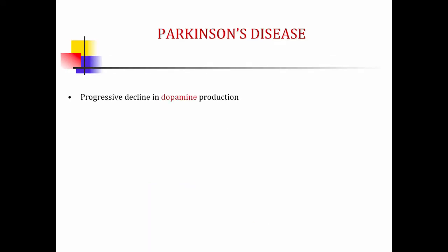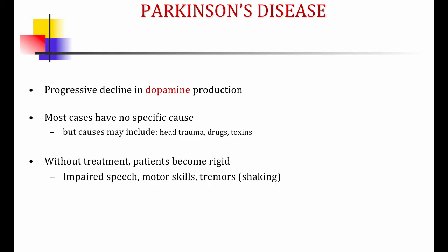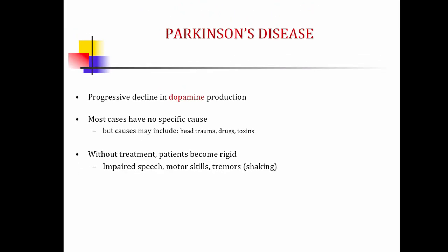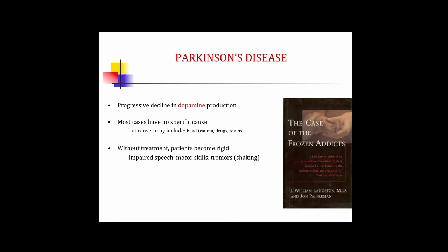In Parkinson's disease, there is a decline in production of the neurotransmitter dopamine. Most cases have no specific cause, but some causes may include head trauma, use of drugs, toxins, anoxia — depriving the brain of oxygen for a long period of time. Without treatment, patients become rigid, have problems with speech and motor skills, and have tremors. Perhaps you've watched Michael J. Fox on television — he has become a spokesman for Parkinson's disease.